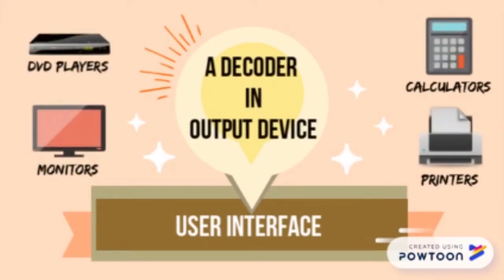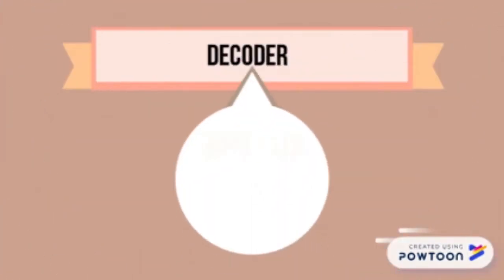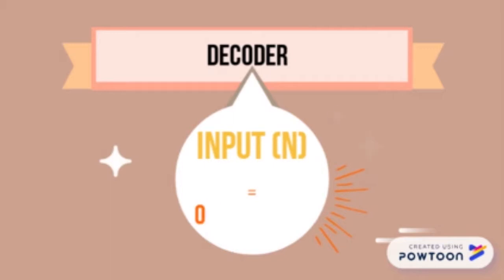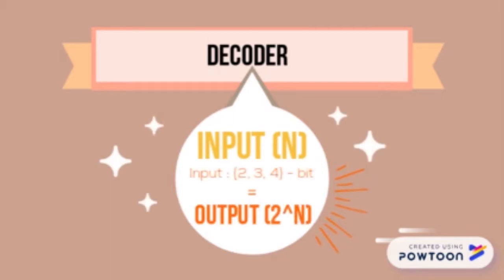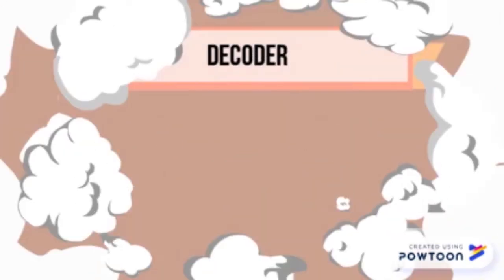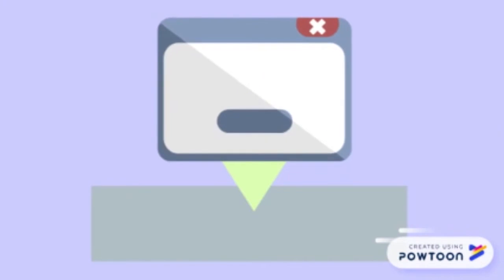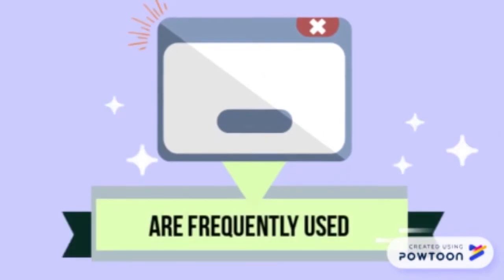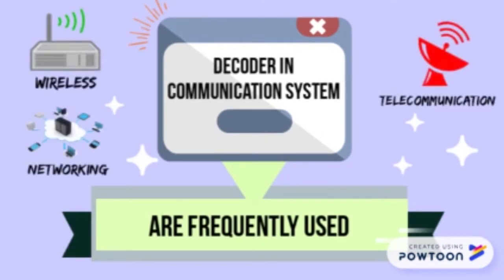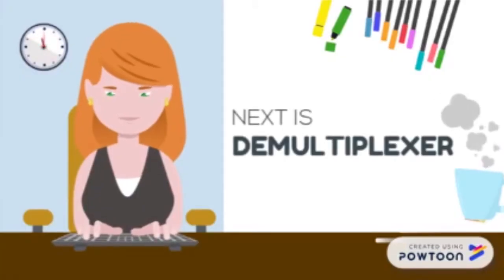printers, calculators, DVD players, etc. A decoder takes N input lines and produces 2 to the power N output lines. The inputs of binary code can be 2-bit, 3-bit, or 4-bit codes. Decoders are frequently used in communication systems such as wireless communication, networking, telecommunication, etc. Next is demultiplexer.